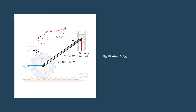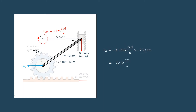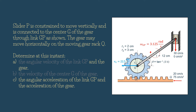Now let's calculate the velocity Vg. From point I, Vg is the tangential velocity due to rotation: Vg = ω_GP × R_GI. With ω_GP = −3.125k rad/s and R_GI = −7.2j cm, we obtain Vg = −22.5i cm/s. Up to now we have answered part of question A — the angular velocity of the link GP — and question B, the velocity of center G of the gear.